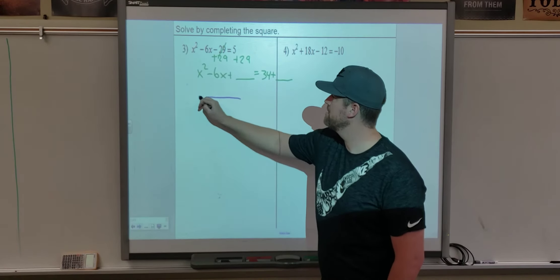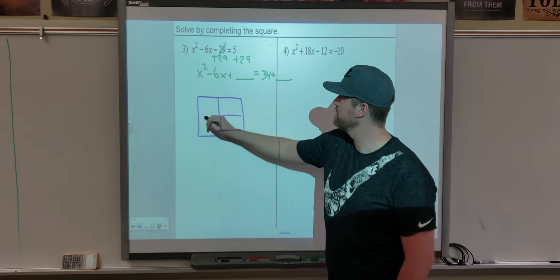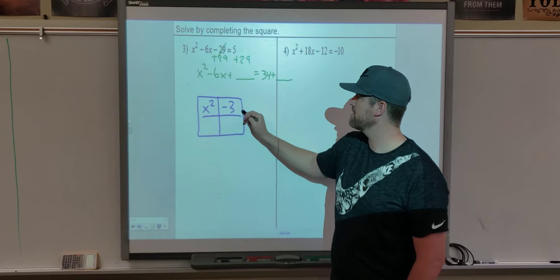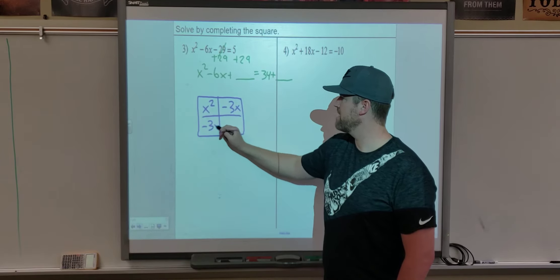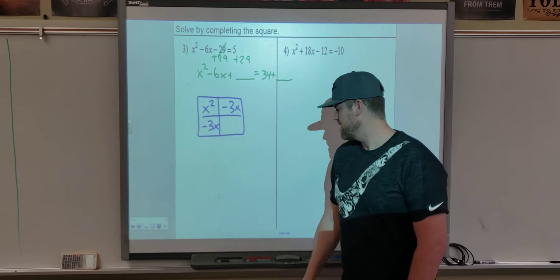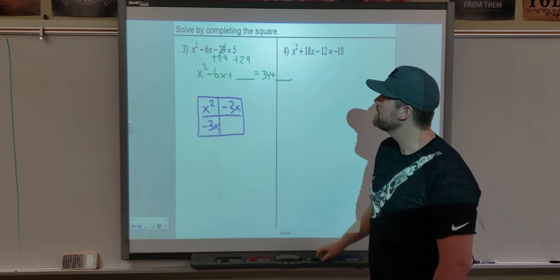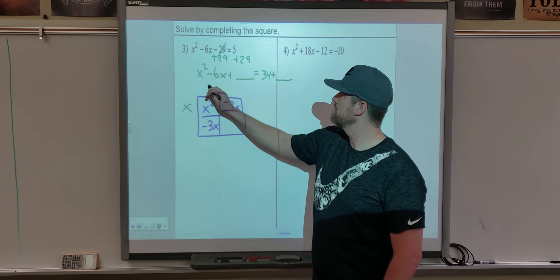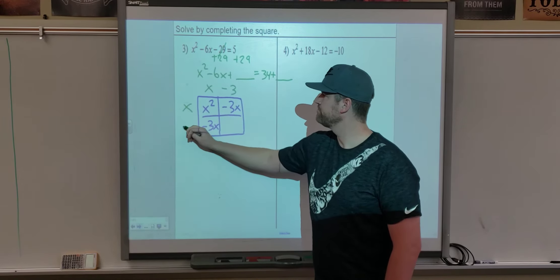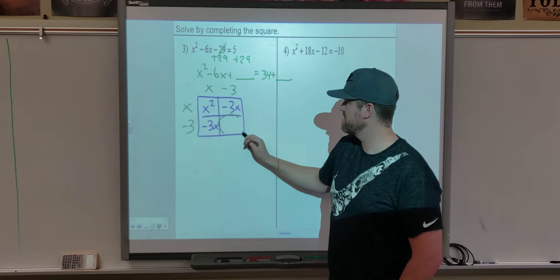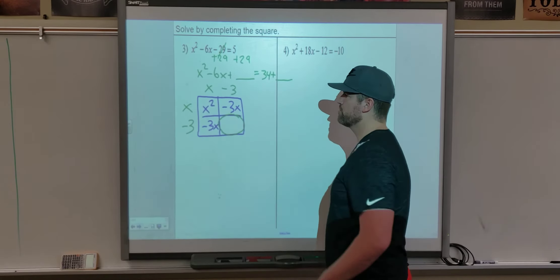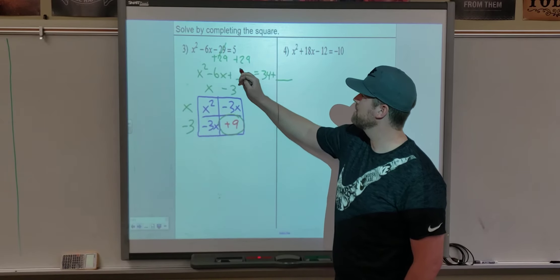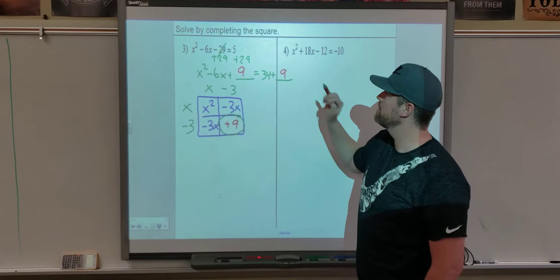Make our square. First term, first box. Split the middle. Negative 3x, negative 3x. That way we're still adding up to the negative 6. And then, in order to find this term here, we're going to take out our common factor. Factor around the outside. And in order to get this box, we have to do negative 3 times negative 3, which is a positive 9. So plus 9, plus 9.